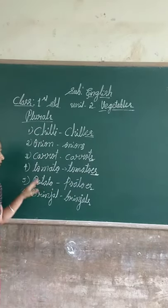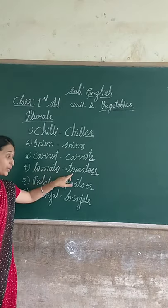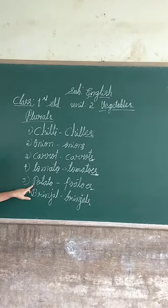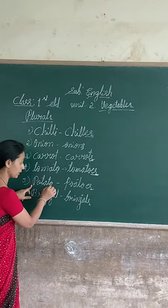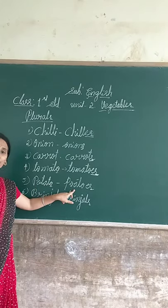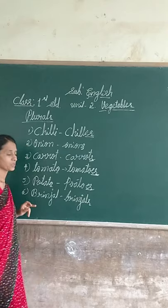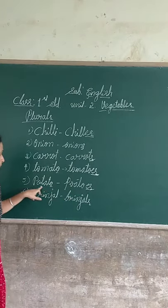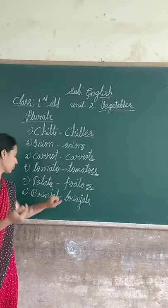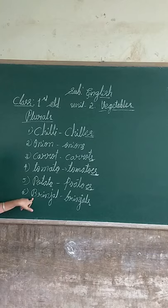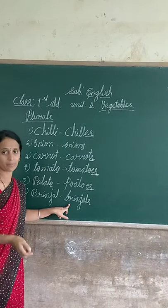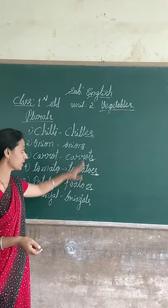Tomato is singular. Tomatoes is more. So you have to use -es. Next one — potato. The last letter is O. Potato — potatoes. One is potato, more is potatoes. Next — brinjal. Brinjal is one vegetable. Brinjals are more vegetables. This is the plural rule.